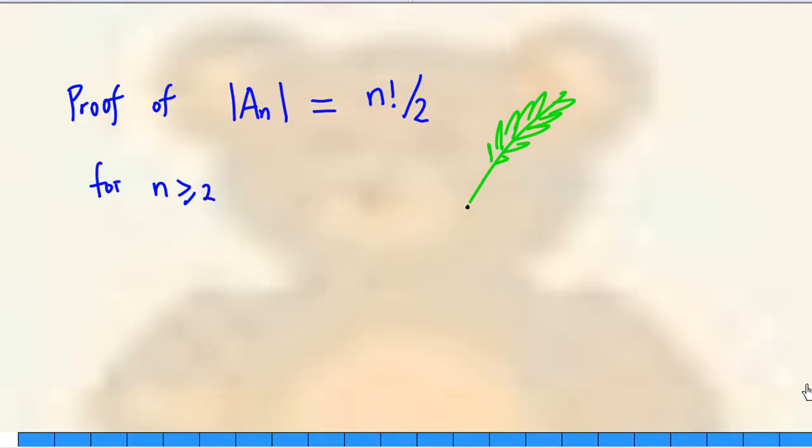This video will present a proof that for n greater than or equal to 2, the order of the alternating group with n letters, A sub n, is equal to n factorial over 2.